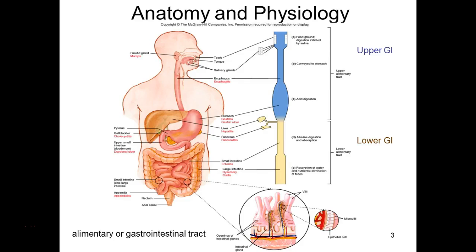Your upper digestive is pretty much your stomach and up. In general, what's the purpose of your digestive system? To break down food and absorb it to provide nutrients to the body.